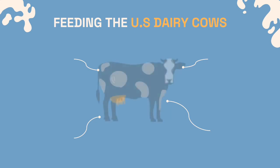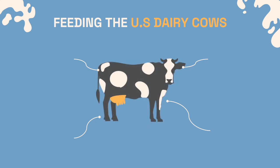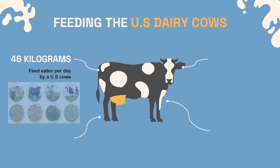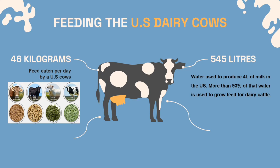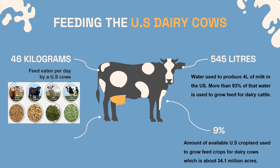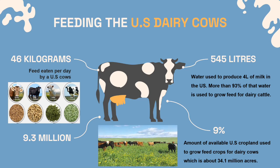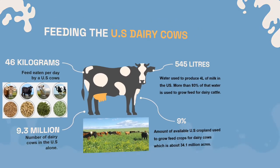Feeding the US dairy herds requires 144 gallons of water to produce one gallon of milk in the US, with more than 93% of that water used to grow feed for dairy cattle. About 46 kilograms of feed are eaten per day by US dairy cows. A total of 545 liters of water is used to produce four liters of milk. Roughly 9% of available US cropland — about 34.1 million acres — is used to grow feed crops for dairy cows, and there are about 9.3 million dairy cows in the US alone.